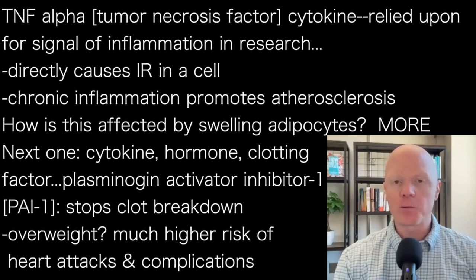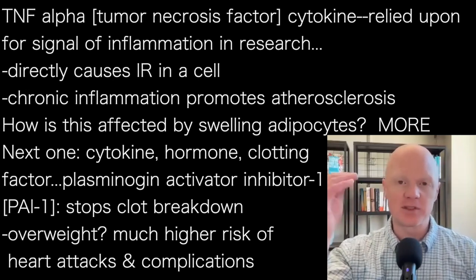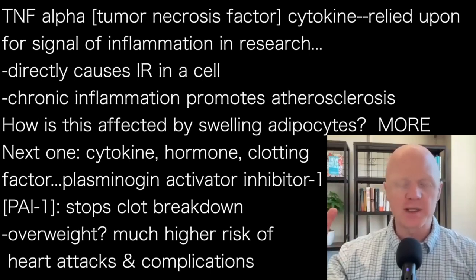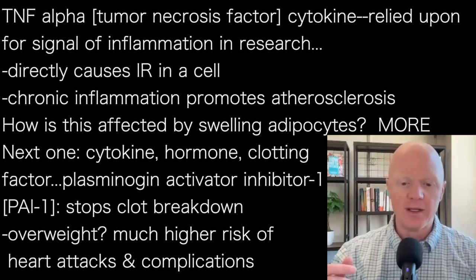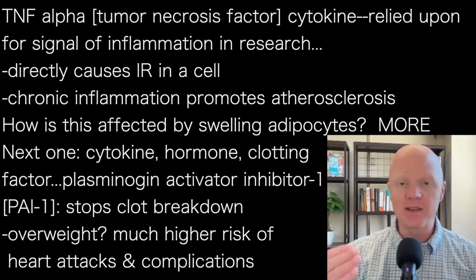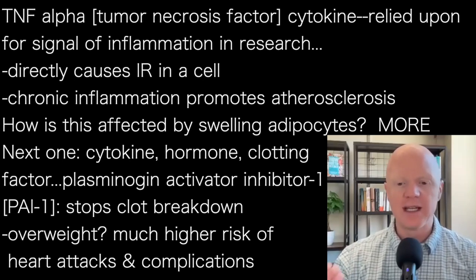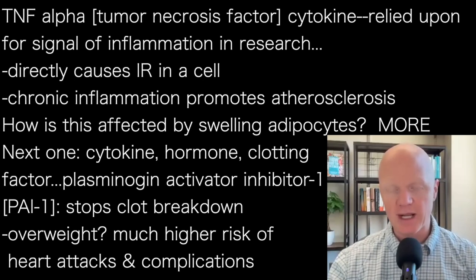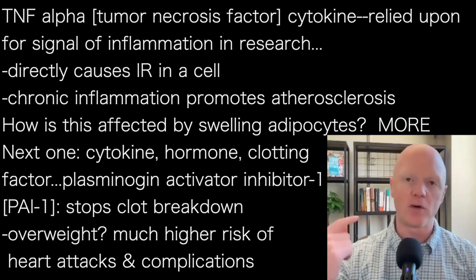PAI-1 will directly promote the formation of clots — actually, it prevents the breakdown of clots. We have mechanisms to get rid of clots through a normal process because sometimes we want a clot, to stop blood from leaking out of a blood vessel from a bruise or a cut. But we need to be able to break those clots down. PAI-1 stops that breakdown, so someone with more PAI-1 will have a greater tendency to form clots. This could very much be at the heart of why overweight or obese people have a much higher risk of heart disease, mortality, or complications — because forming more clots makes it much easier to develop a stroke or infarction or heart attack.